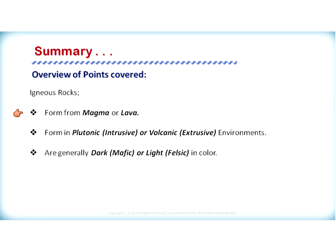In summary, igneous rock forms from molten rock. Molten rock is classified as magma if it's beneath the Earth's surface, or lava if it's on the Earth's surface. If igneous rocks form beneath the Earth's surface, they are called plutonic or intrusive rocks. If igneous rock forms from lava on the Earth's surface, it is from a volcanic or extrusive environment. Regarding composition, magmas or lavas responsible for igneous rocks are generally mafic — dark in color with high iron and magnesium — or felsic — light in color with high silica minerals.